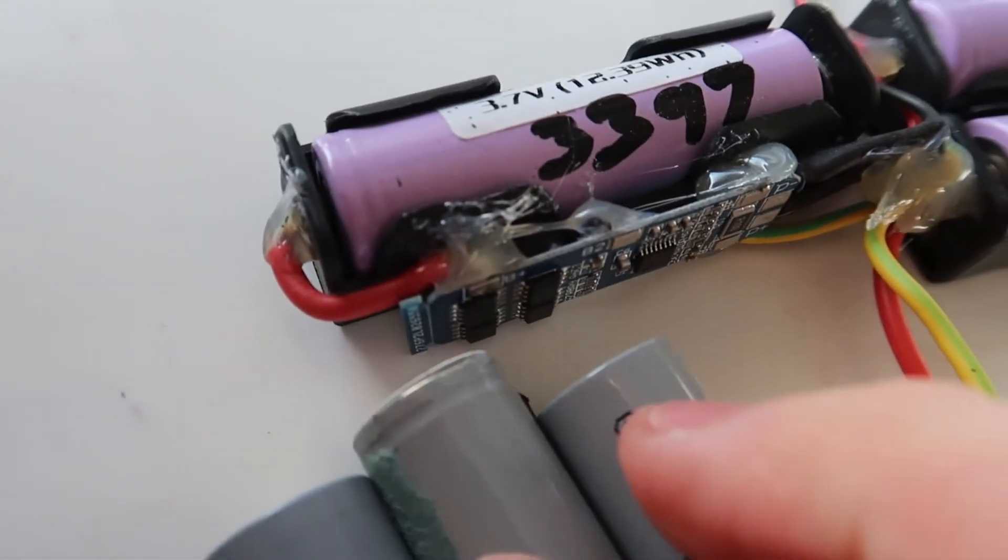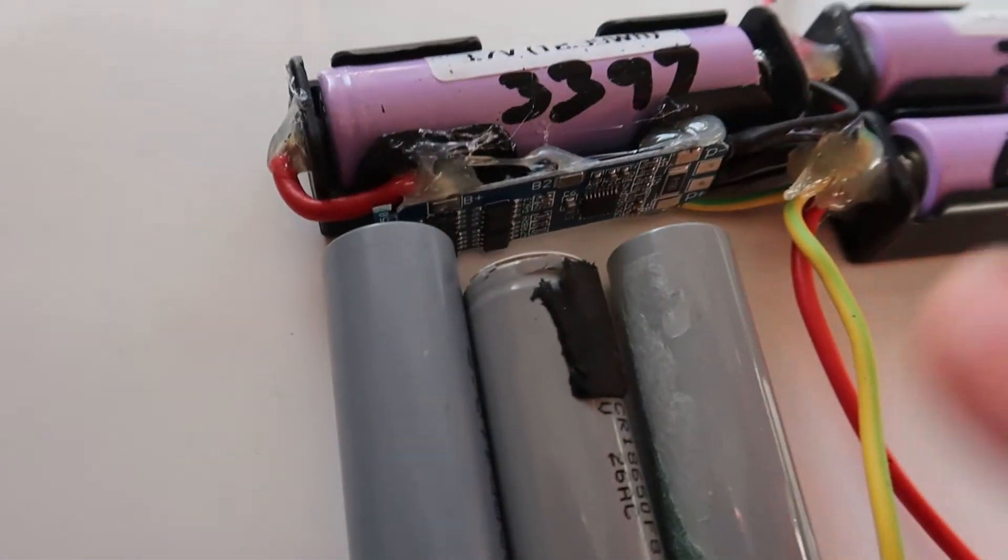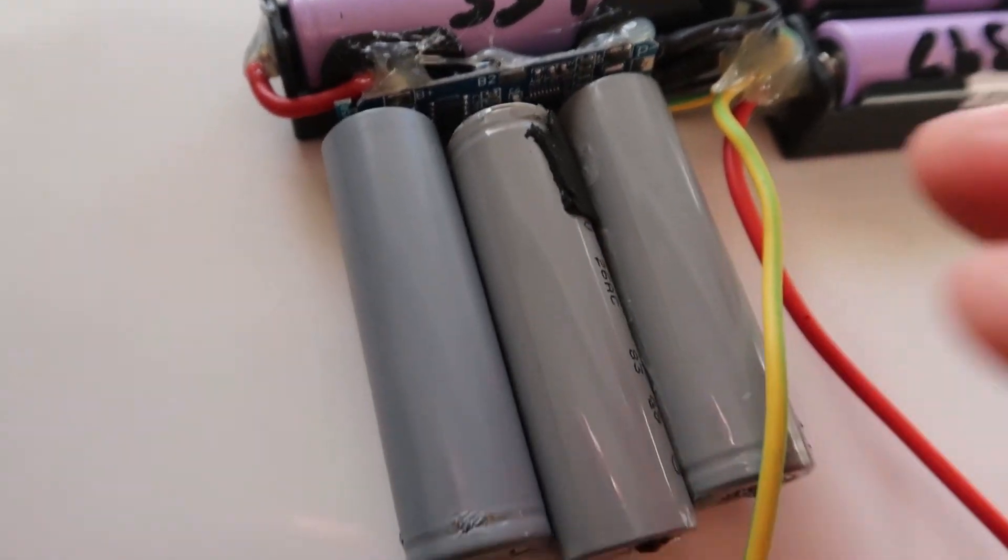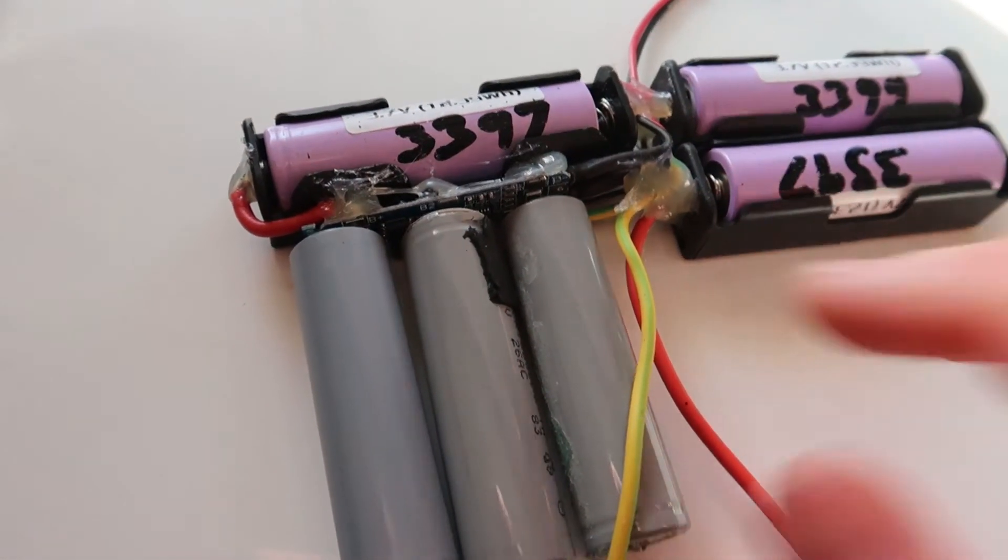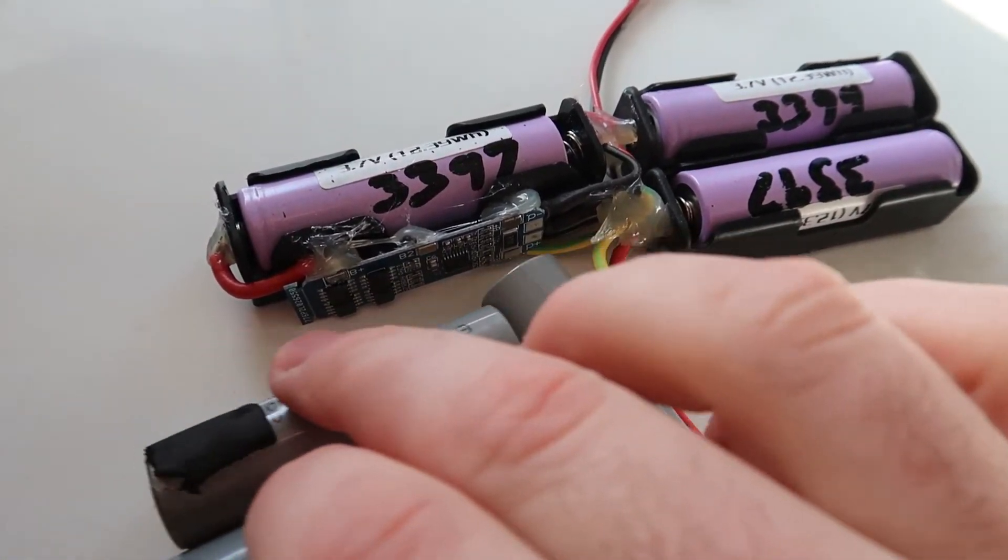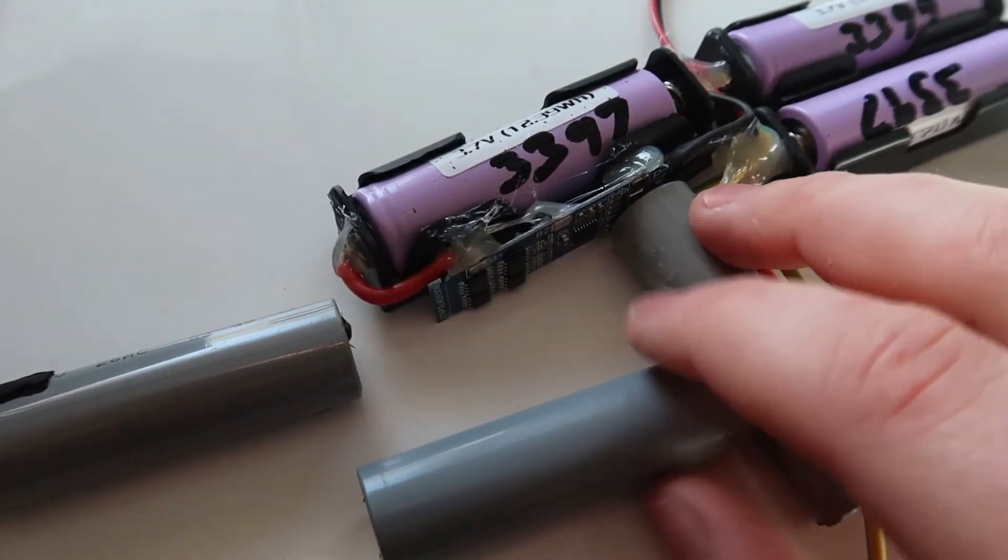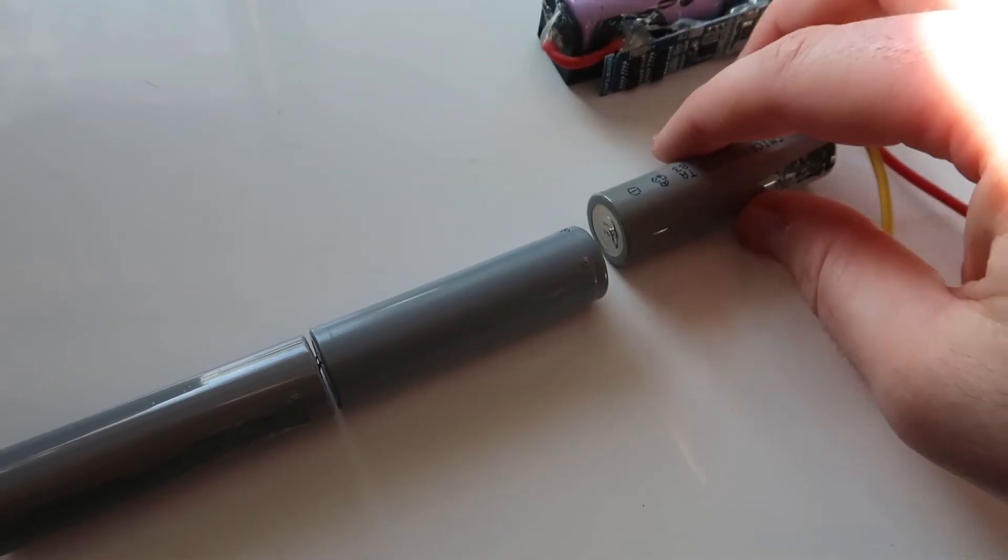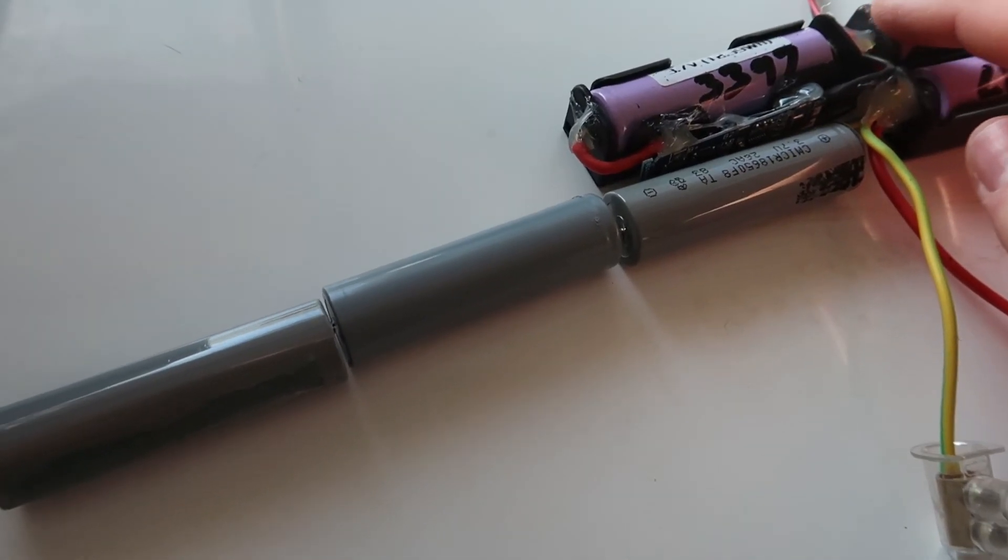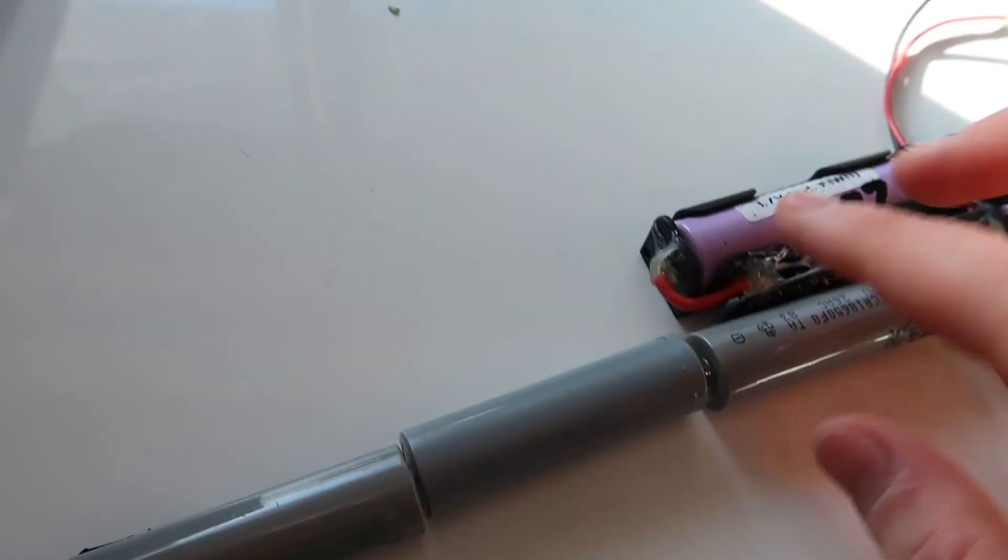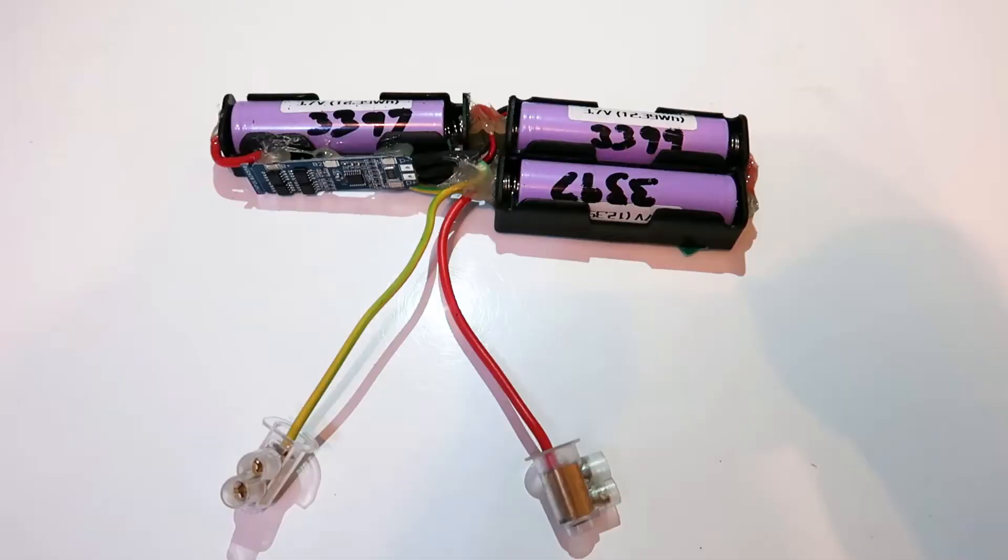You could also run them lengthwise and have all three of the batteries running right next to each other, like I've set up here. And you could put the circuit right up against one of those batteries. So it could be a nice, thin, longer type of battery pack. It just depends on how you want to set it up.